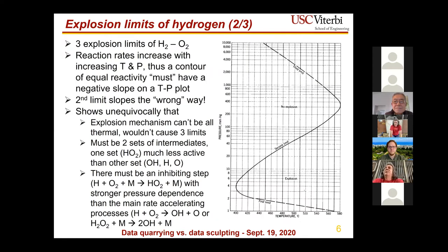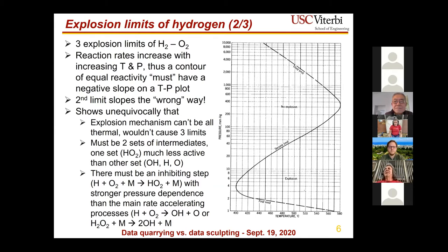Here are the three explosion limits of hydrogen — a picture from Lewis and Van Elbe's text reproduced many times. Normally you expect reaction rates to increase with both temperature and pressure, meaning a contour of equal reactivity must have a negative slope on a temperature-pressure diagram. But the so-called second limit slopes the wrong way. Why is there a separate first and third limit, and why does the second limit slope incorrectly? This tells you many important things.